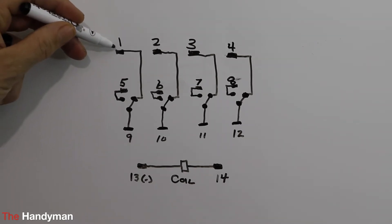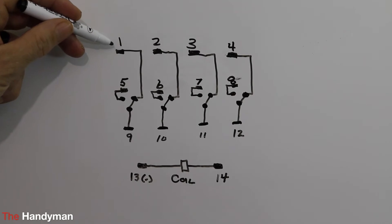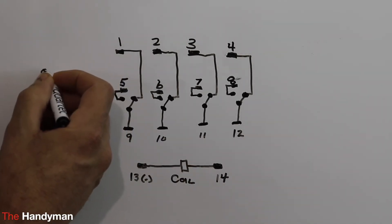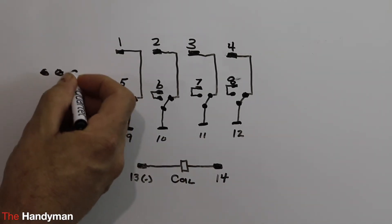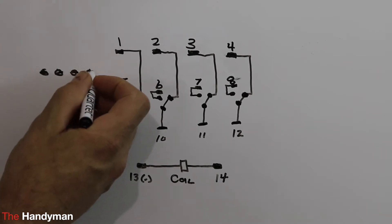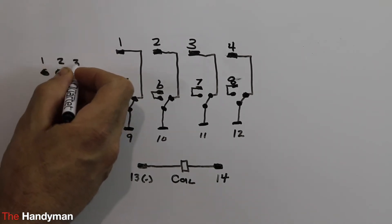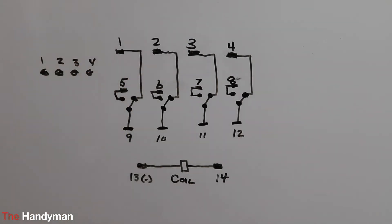...is you have terminal number one, and if you look at the block that your relay plugs into, you will see that all the screw terminals will have numbers above them: one, two, three, four, and so on. Not necessarily in that order.